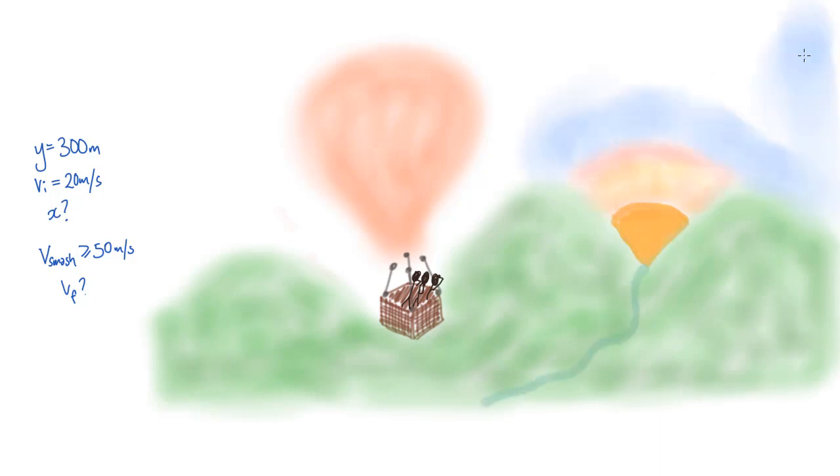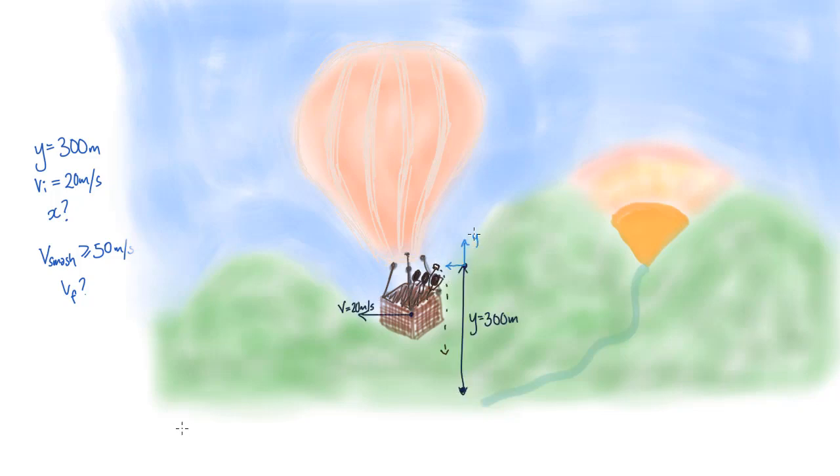Let's start with the first problem. We know this is a projectile motion problem since we have an object moving under the influence of gravity only. We're looking to find the distance that the phone travels from the hot air balloon. We know the initial horizontal speed vxi, and there are no horizontal forces, so the horizontal velocity is constant. The distance the phone travels horizontally is given by x = vxi × t, where t is the time the phone takes to hit the ground.